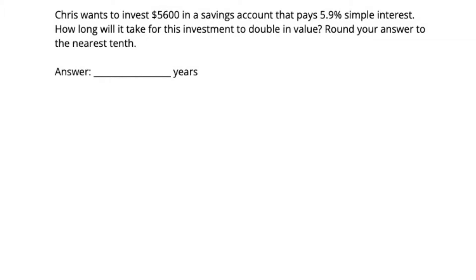So first, let me say that this problem is actually stumping a lot of classmates — probably because it doesn't appear to have all the information you need. But we're going to dig a little deeper and see if we can work this out together. Let's start by finding out what we're given and write it down. Chris wants to invest $5,600, and when you invest money into an account, that amount is called your principal. So our principal is $5,600.